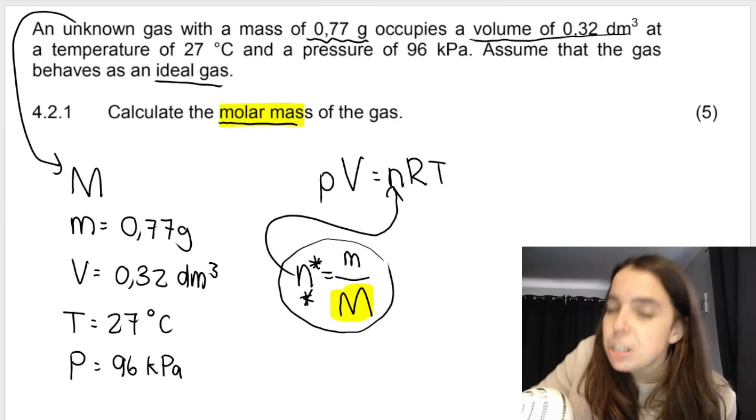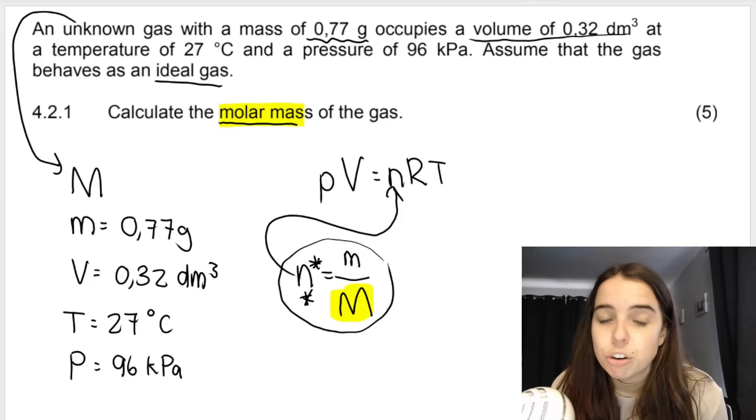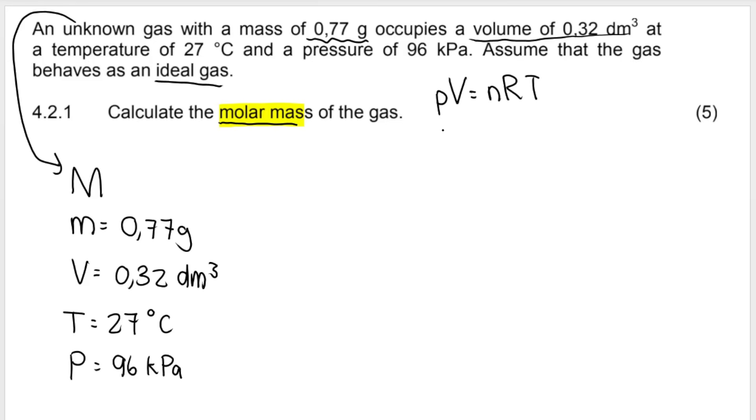Now, remember, this is the special formula where all your variables have to be in the correct unit. So we have to do some converting in this question. So first things first, pressure must be in pascals. They've given it to me in kilopascals. Remember, one kilopascal is equal to 1000 pascals. It's like one kilogram. So kilopascal is equal to 1000 grams. Similar sort of conversion. So in other words, we need to multiply by 1000. That means that there will be 96,000 pascals of pressure. We've converted pressure.